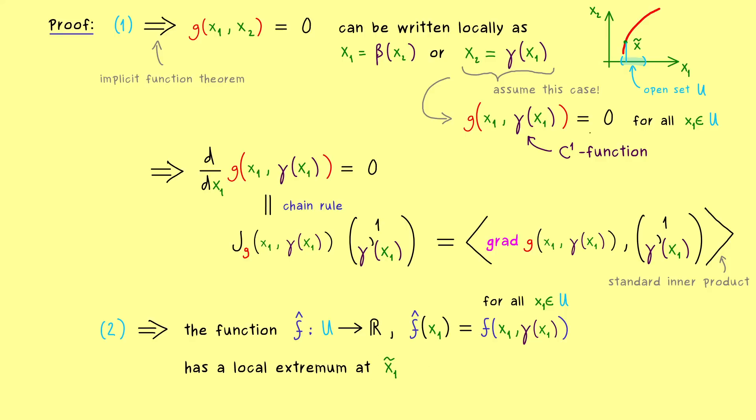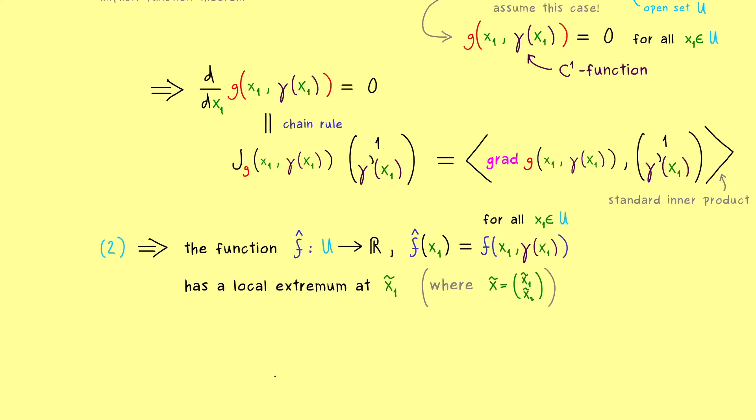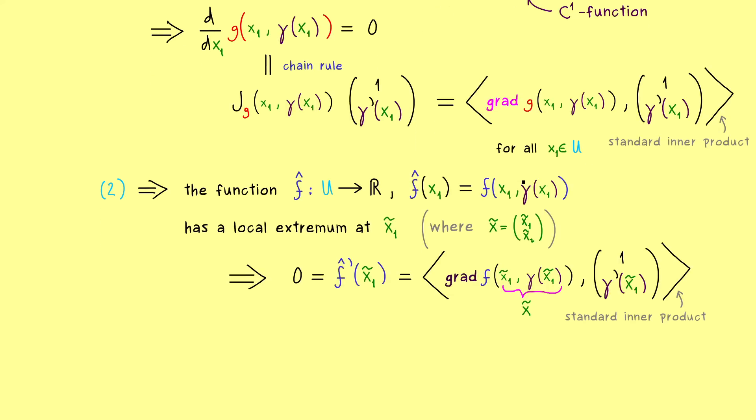So this is the next conclusion: we have a one-dimensional function which has a local extremum at a given point. There we can use our knowledge of the necessary condition for local extrema. This is really simple: we know the derivative at this given point has to vanish. So in other words, we can use the chain rule again. We get the same calculation as before, but instead of the gradient of g we get the gradient of f. Most importantly, we have everything at point x₁ tilde. However, at this point we know γ(x₁ tilde) is exactly x₂ tilde. Therefore here we have a claim for the gradient of f at point x tilde. But we have the same claim for the gradient of g because this equation holds for all x₁ in U, so in particular it holds for point x₁ tilde.